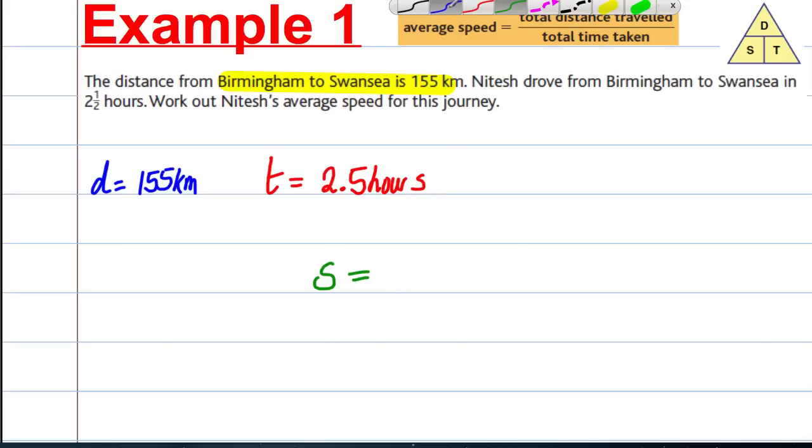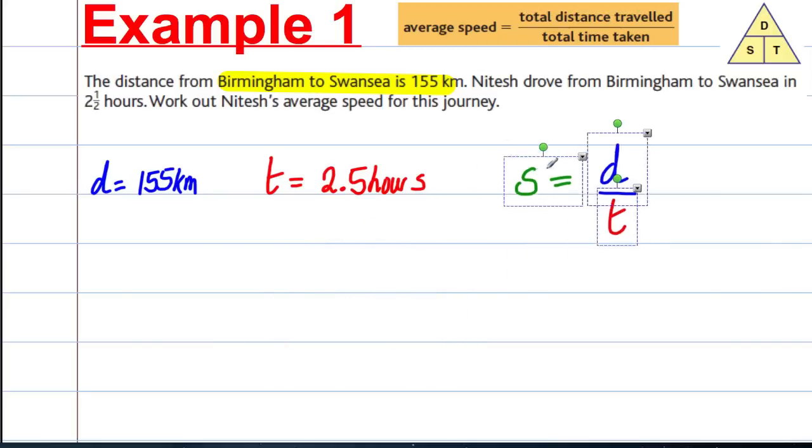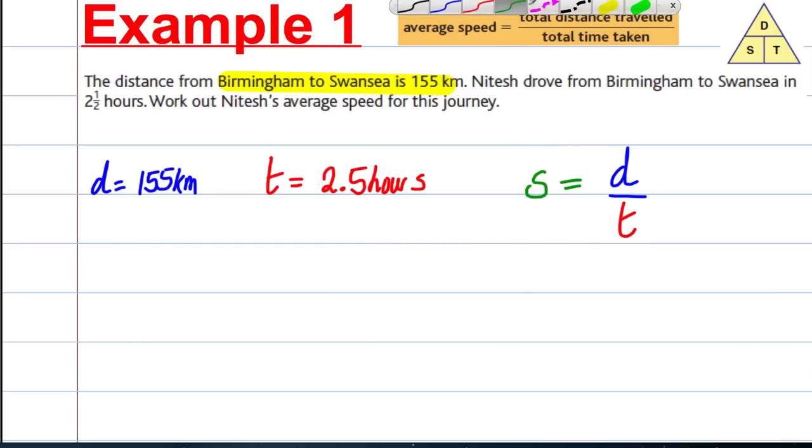Well, we know that speed equals distance divided by time, so all we need to do is substitute into this equation and we'll have our answer. Therefore, the speed must be 155 divided by 2.5. We type that in our calculator and we get 62 as our answer, so speed is 62 kilometers per hour. Very straightforward.